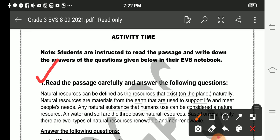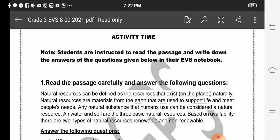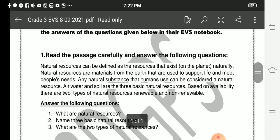Any natural substance that humans use can be considered a natural resource. Air, water, and soil are the three basic natural resources. Based on availability, there are two types of natural resources: renewable and non-renewable.